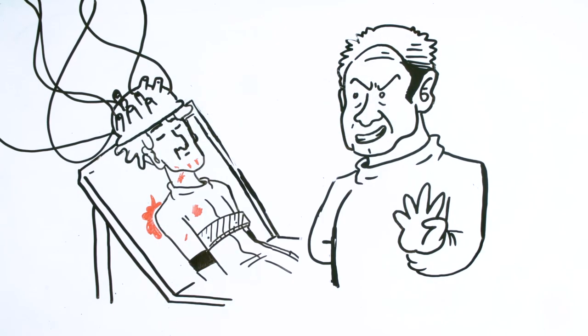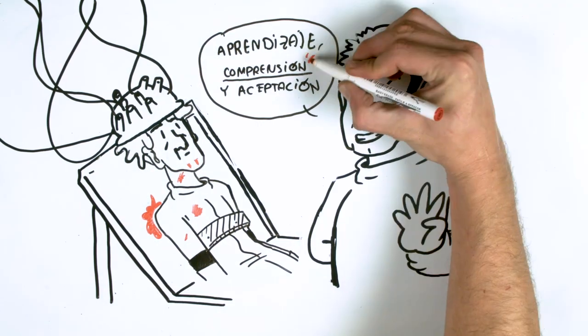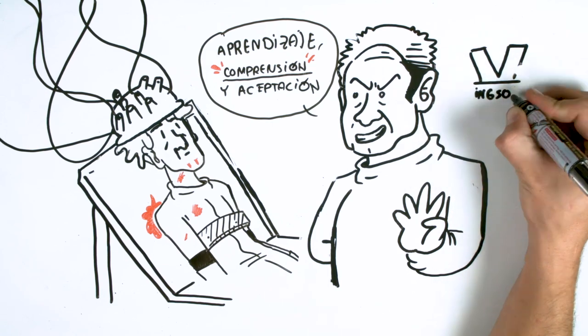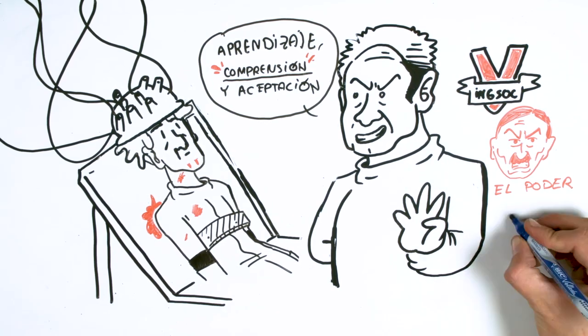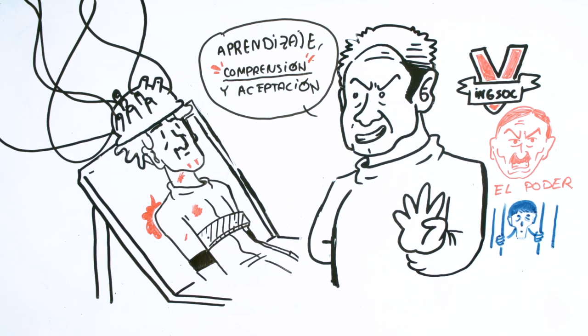Upon waking, O'Brien explained to Winston that there were three steps in his reintegration: learning, understanding and acceptance. He was in the second. Then he gave a speech about what fueled the party. It was power for power and specifically power over men. Its main objective was to empty them.